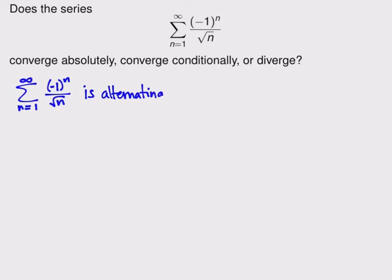And anything more that we want to do, we need to know the sequence of positive terms, which we usually call a sub n. So I'm going to name that with a sub n is 1 over square root of n. That's the positive part of the terms in this series. Everything else we want to do depends on what behavior the sequence a sub n has.